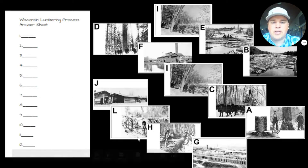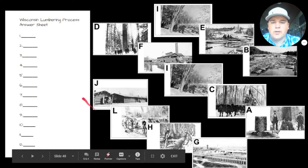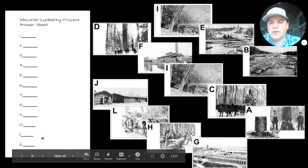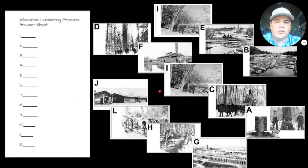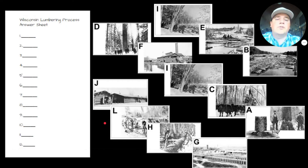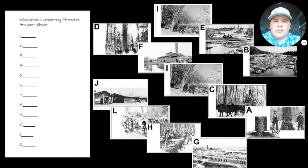You can see that we have an answer sheet right here with number one all the way down to number 12. What you're going to do is whatever one you think is the first step, you're going to put it in first, then next all the way down to the final step number 12. To make this a little easier, I'm going to give you the first and the last answer, so that you're starting off on the right steps and ending on the right steps.